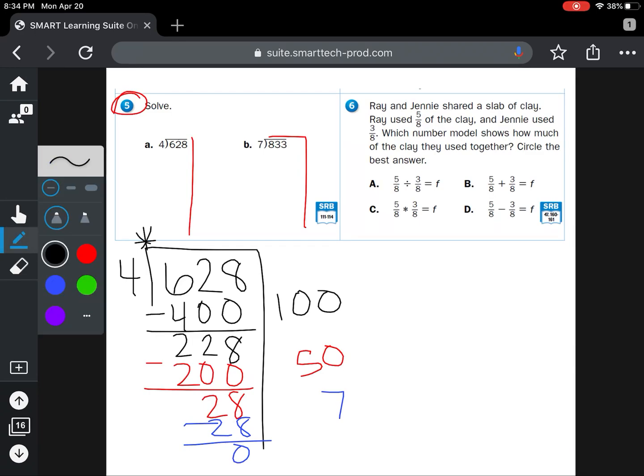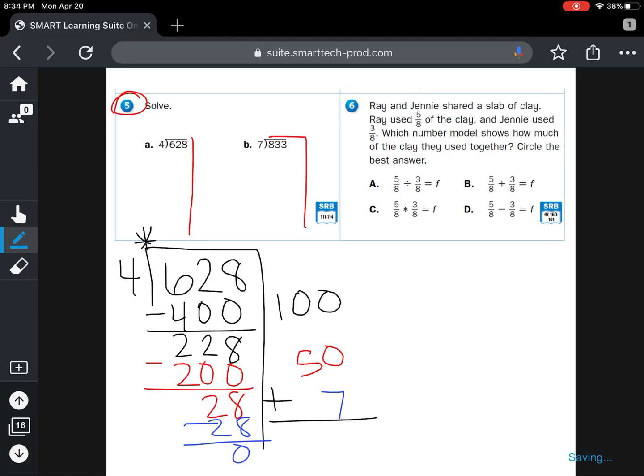Now we can add up our partial quotients. And it looks like the answer for 628 divided by 4 is 157. Make sure you write that above the answer for part A, 157 for our answer.